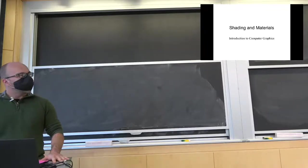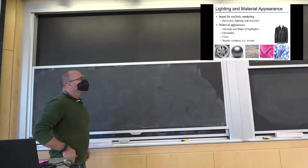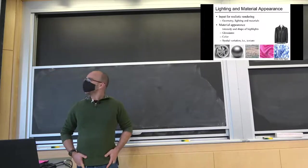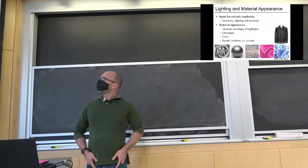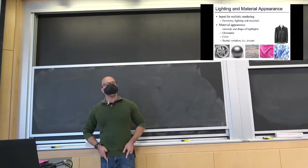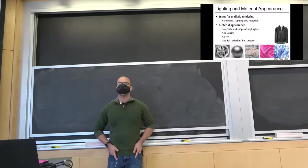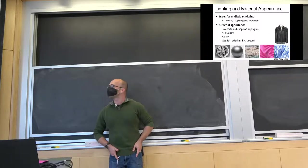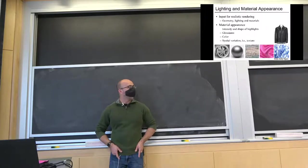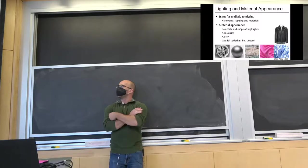So today our focus is on lighting and material appearance — this is really our intro to realistic rendering. So far we've been living in a 1970s Lambertian universe, and we're going to try to move a little bit closer to at least 1995. That involves an interaction between geometry, lighting, and material.